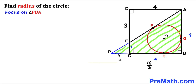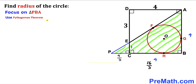Now let's focus on the big right triangle PBA, whose legs are 16/3 and 4, and we are going to find its hypotenuse PA using the Pythagorean theorem: a² + b² = c².